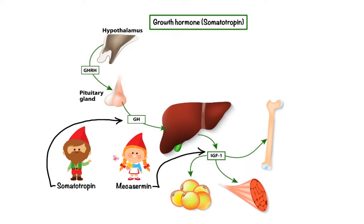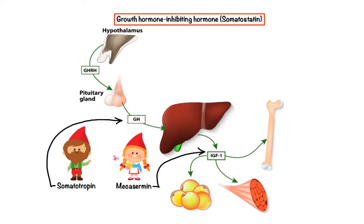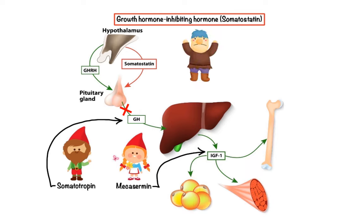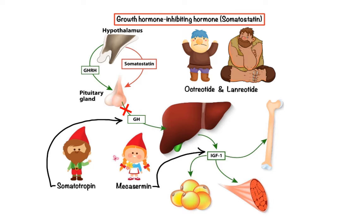The body's primary mechanism of regulating growth hormone is to release growth hormone-inhibiting hormone, also known as somatostatin, secreted from the hypothalamus, which inhibits pituitary gland secretion of growth hormone. In disorders of excessive growth hormone secretion, which can lead to gigantism in children and acromegaly in adults, synthetic forms of somatostatin can be used to reduce blood levels of growth hormone. Examples include octreotide and lanreotide, which bind to somatostatin receptors on the surface of different cell types to cause inhibition of growth hormone secretion and its effects on target tissue.